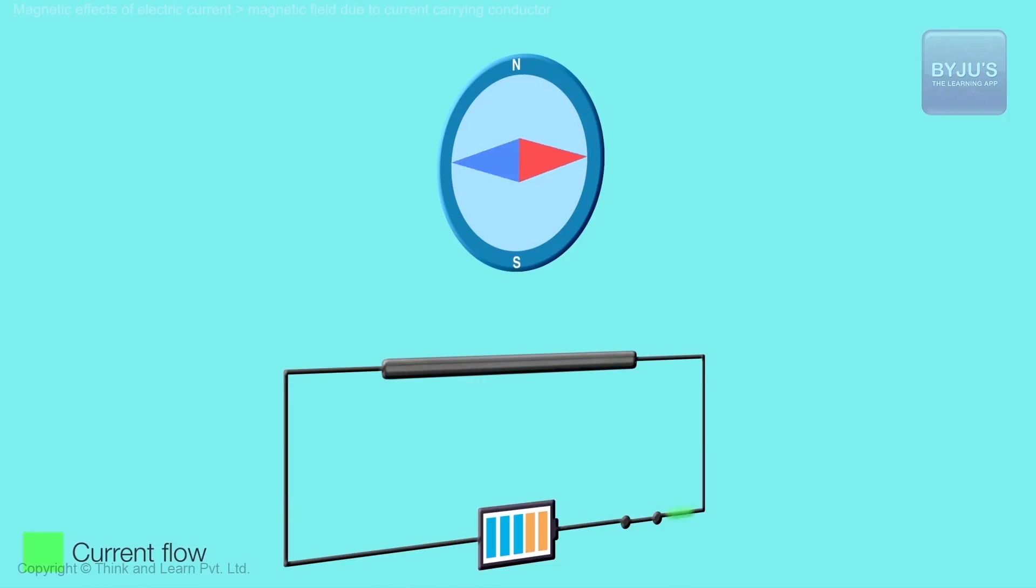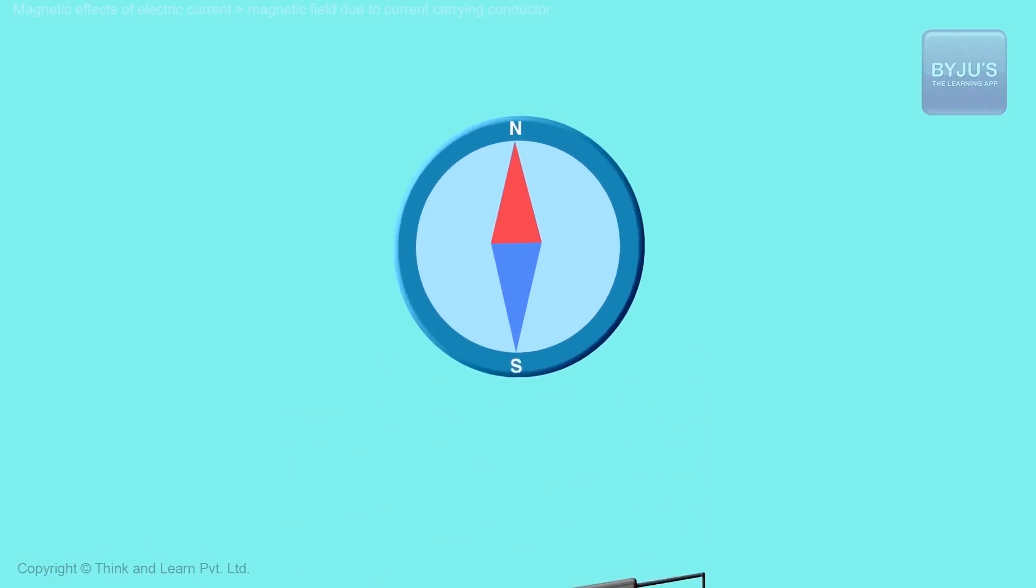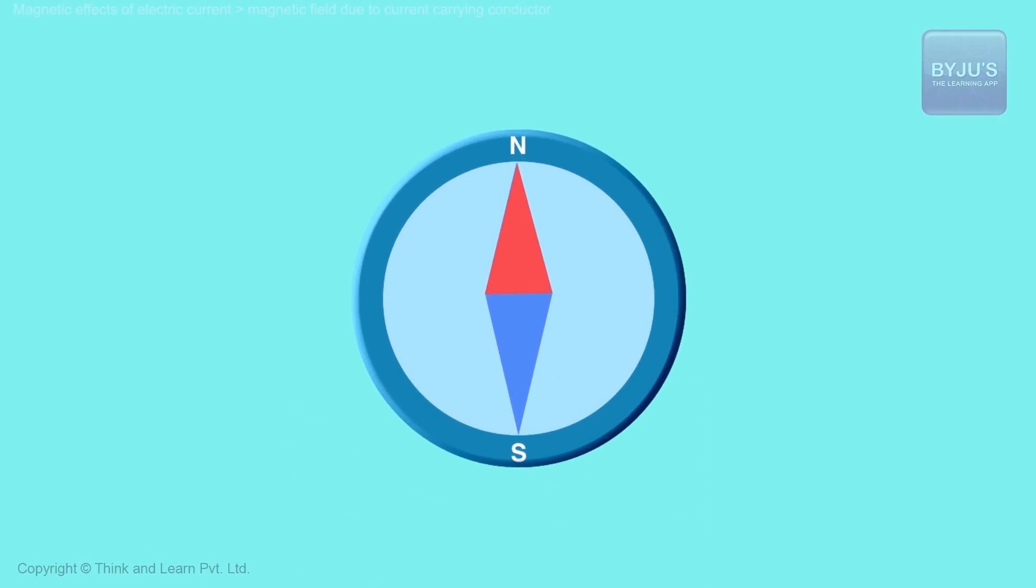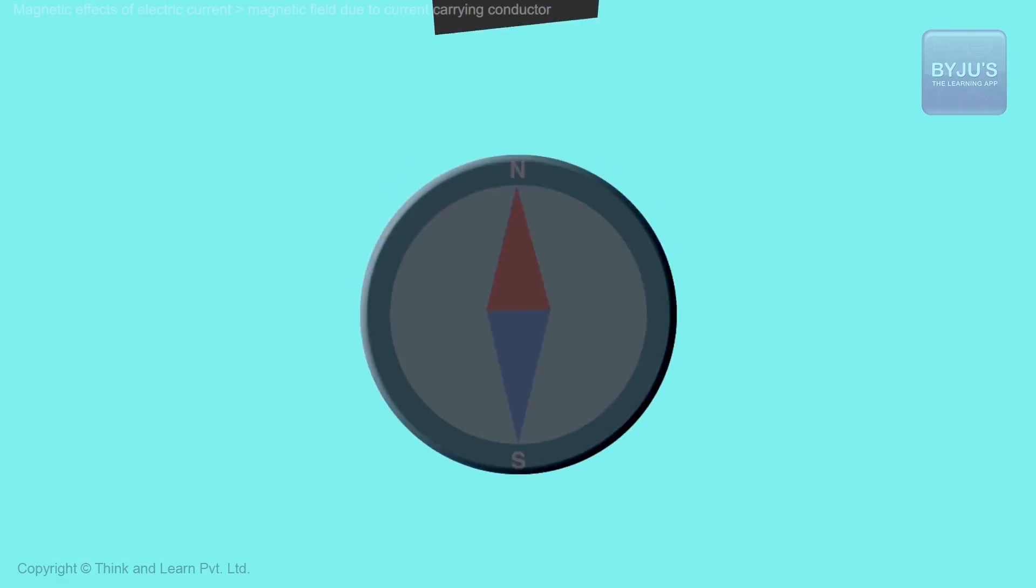And he started playing with this. He started taking it further and further away. The effect wasn't much. He brought it closer and closer. It started turning more. Then he switched off the power and all of a sudden it went back to the old position it points to, which is north and south as it always does.